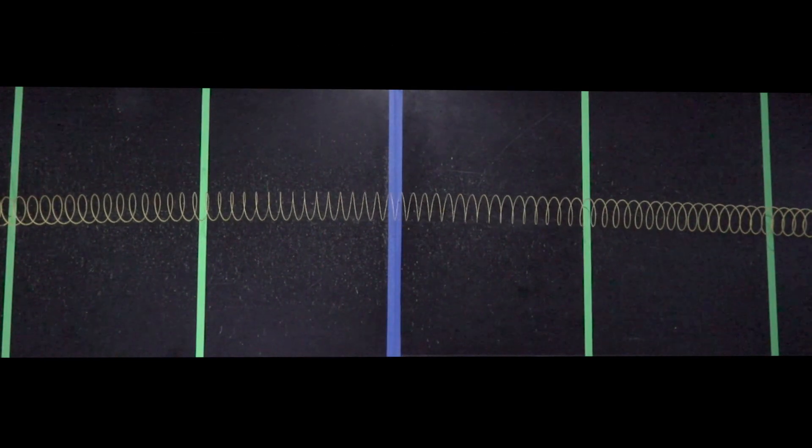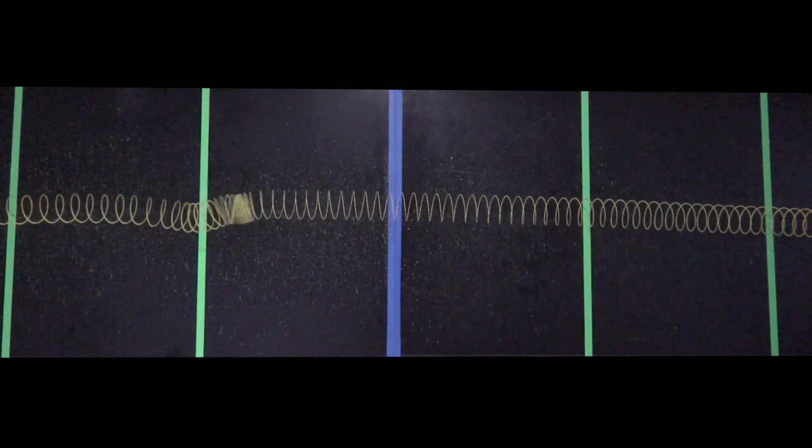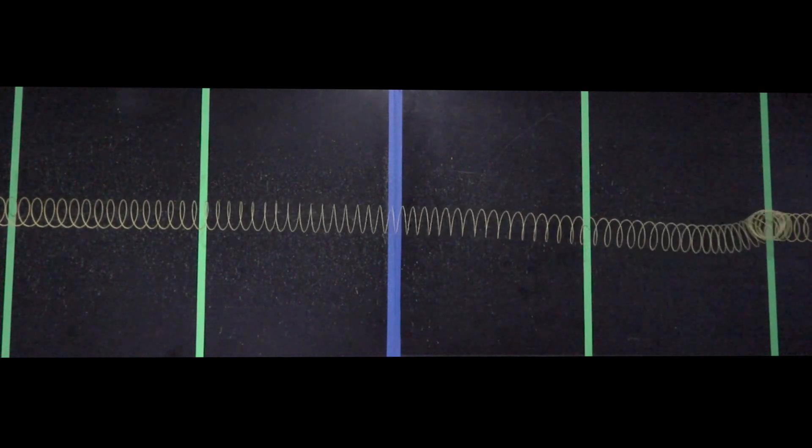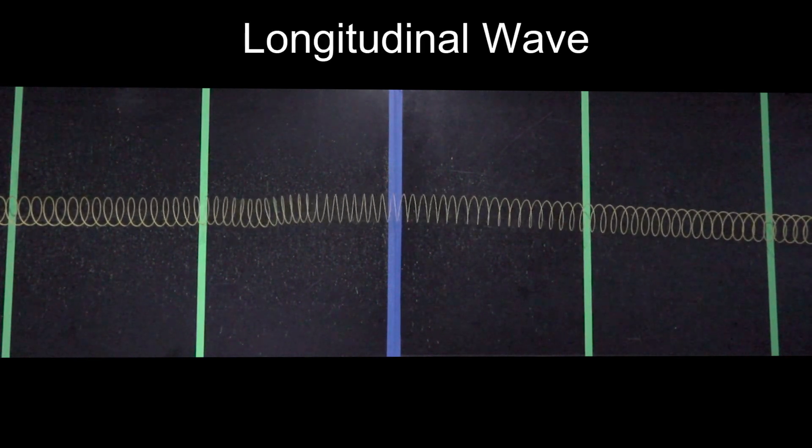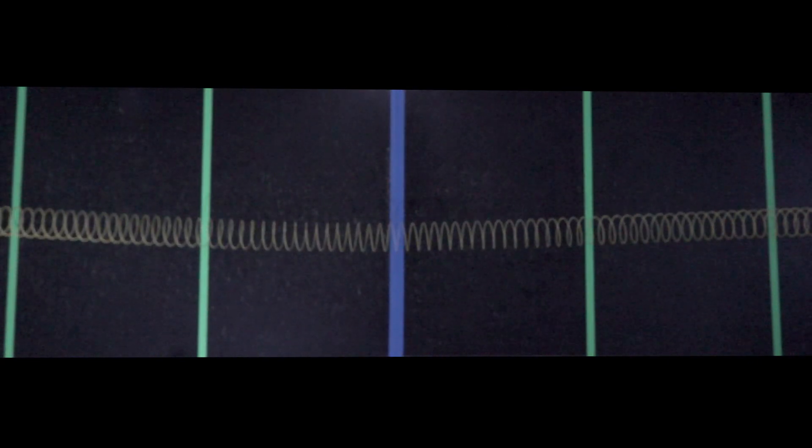The next type of wave we will observe is generated when the disturbance is parallel to the motion of the wave. This type of wave is known as a longitudinal wave. One of the important properties of waves is the speed that the disturbance travels down the medium.